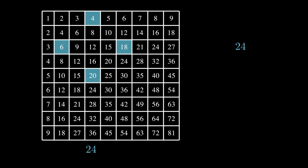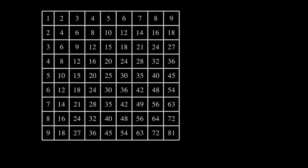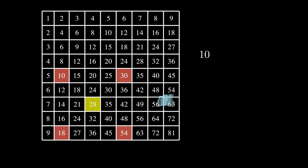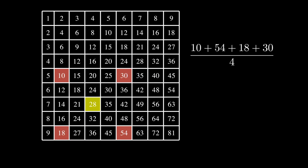It's a fun and relatively easy exercise to prove all of this, so let us dive a bit deeper. If the center of a square happens to be another cell of our times table, its entry is the average of the diagonal elements.